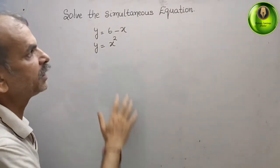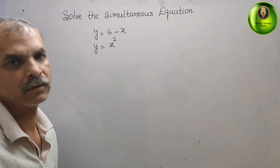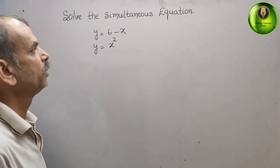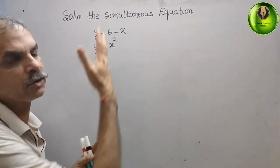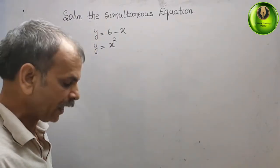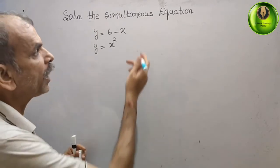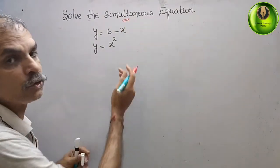Your question is solve the simultaneous equation. They have given you y = 6 minus x, y = x square. That means we have to find out both the values of variables, that means x and y both.